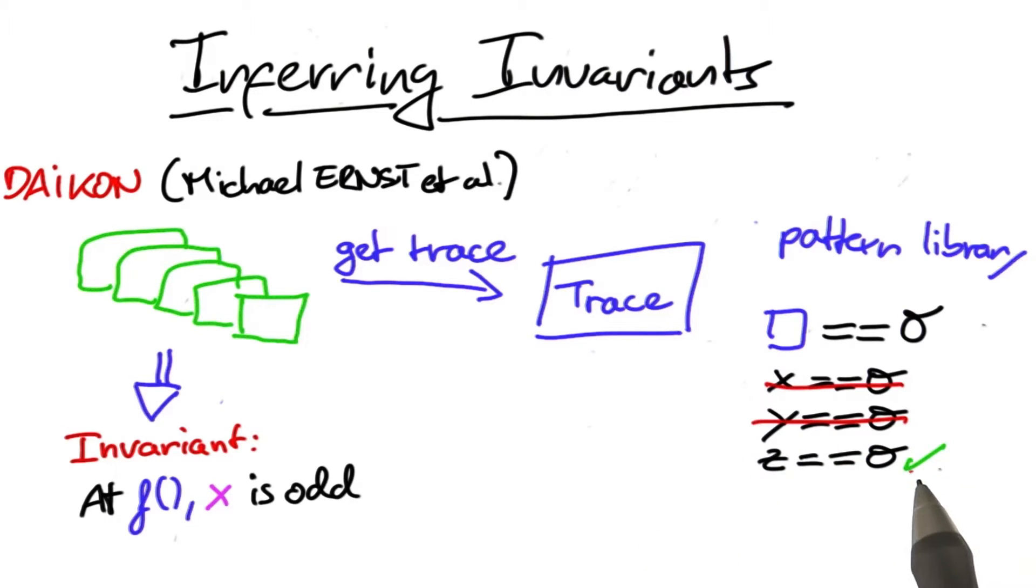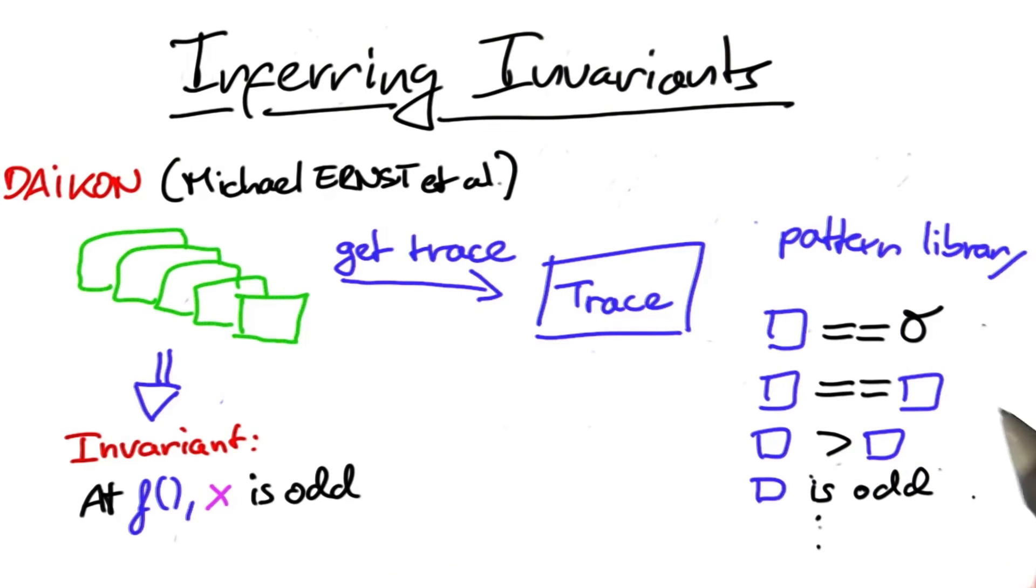Daikon checks these patterns for every single invocation of a function and only retains those that hold for all invocations. This means that over time, the set of instantiated patterns becomes smaller and smaller. It's like a sieve. At the end, if an instantiation is found to hold for all invocations of a function, it's retained and finally reported as an invariant.